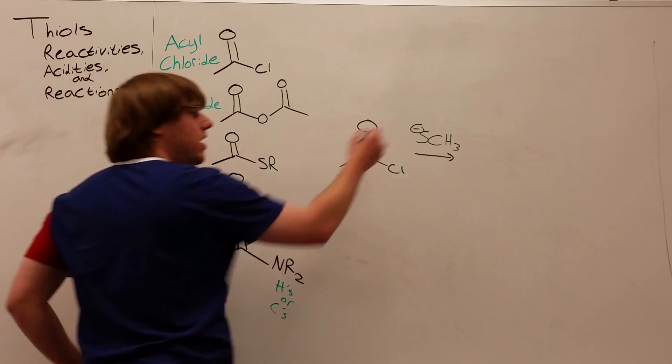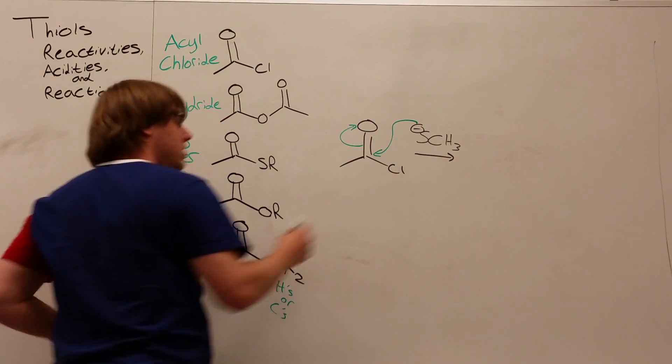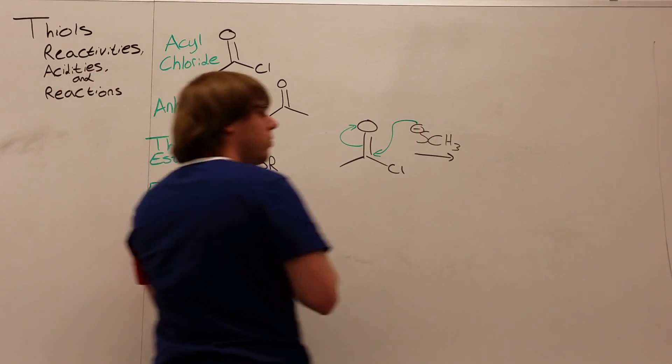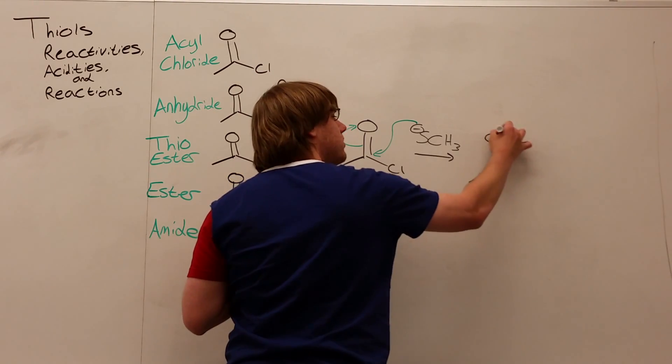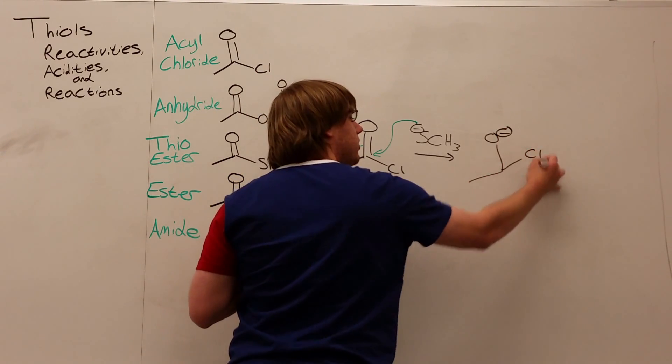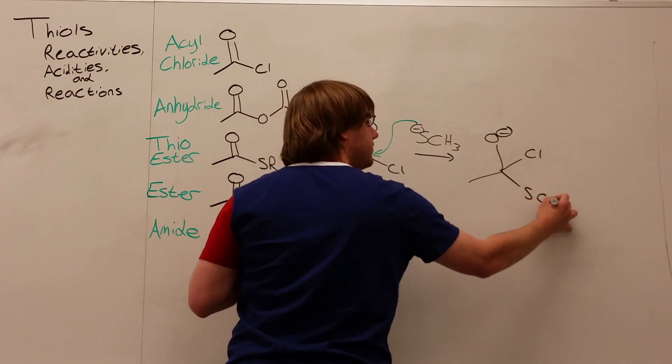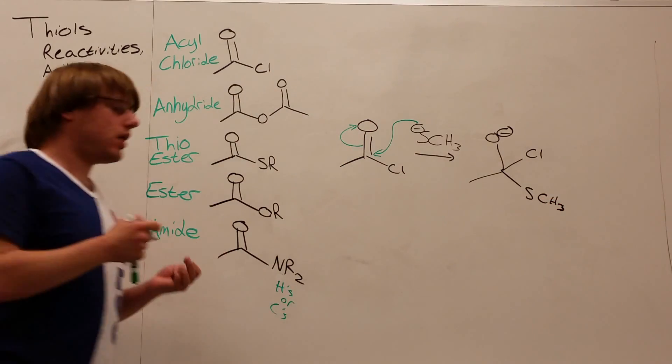That SCH3 minus comes in and attacks the carbonyl, that resonates up, and you get your intermediate, where it's single bond O minus, the chlorine leaving group, and the SCH3.